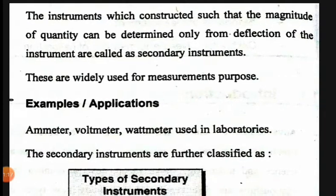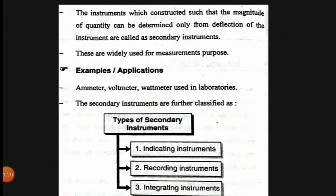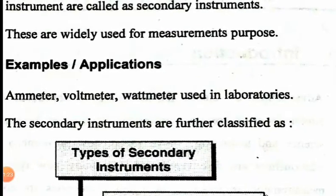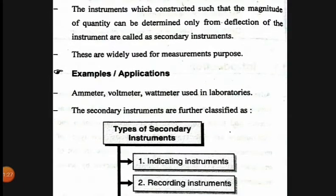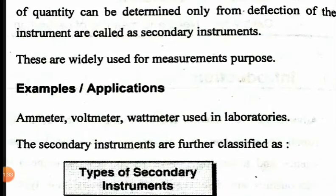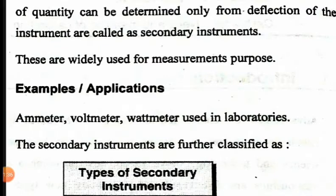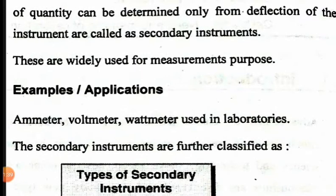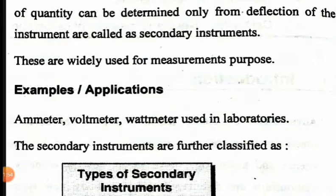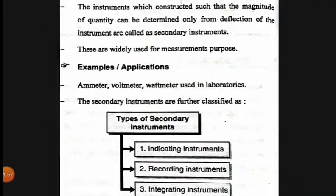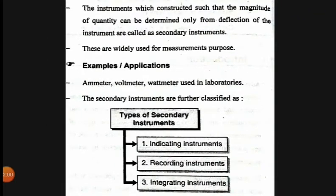Secondary instruments are widely used for measurement purposes. Examples include the ammeter, voltmeter, and wattmeter, used in laboratories. The ammeter is used to measure current, the voltmeter is used to measure voltage, and the wattmeter is used to measure power or energy.